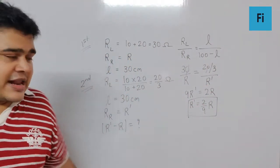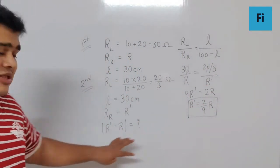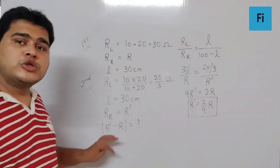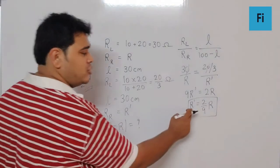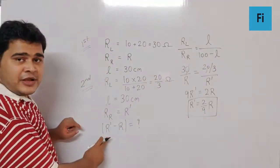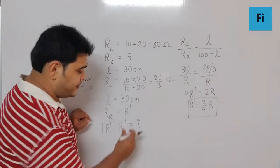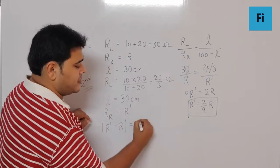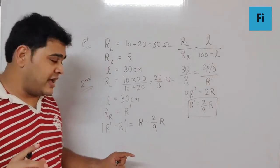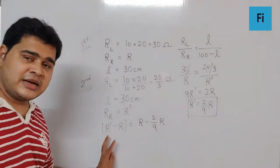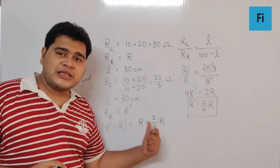So R prime is smaller than R. To find the change, we substitute R prime to get the formula. We get R minus 2 by 9 R. I have written R minus R prime and subtracted in this order, but since I'm interested only in the magnitude, I can subtract in any order.